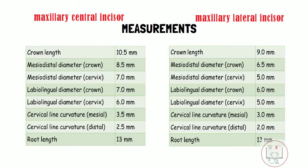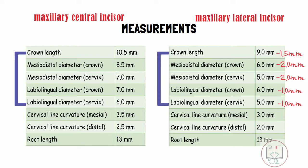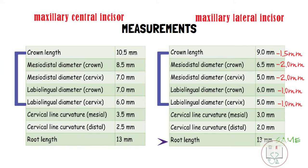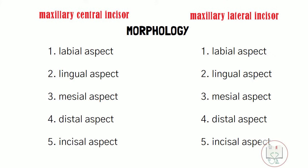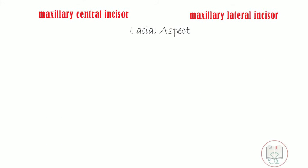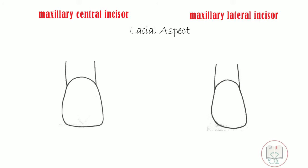Looking at their measurements, the crown of the lateral incisor is smaller than the central incisor in all dimensions. Though the crown is smaller, the root length is the same. This makes the relative length of root to crown greater in the lateral incisor than the central incisor.